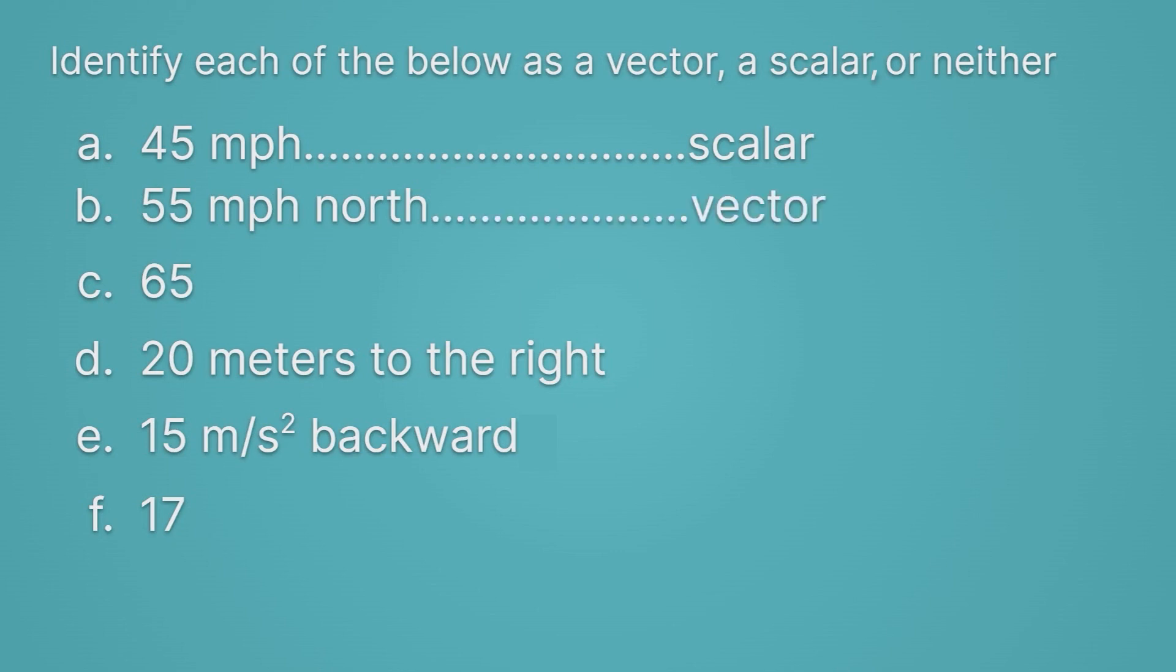Okay, next up we have just 65. Well, that has a size, it's 65, but it doesn't have a unit. So it doesn't really mean anything. And that makes it neither a vector or a scalar. It's just a number.